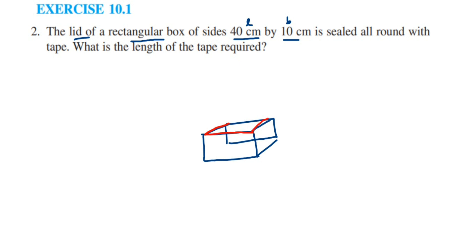You can see all around they have mentioned, they want to seal all around with a tape. So the red color one you can see here, this top is the top of the rectangular box. They want to seal this with a tape and we have given that length is 40 centimeter and breadth is 10 centimeter.